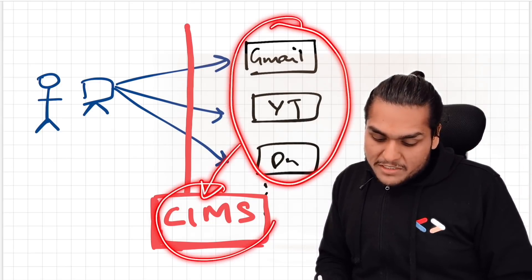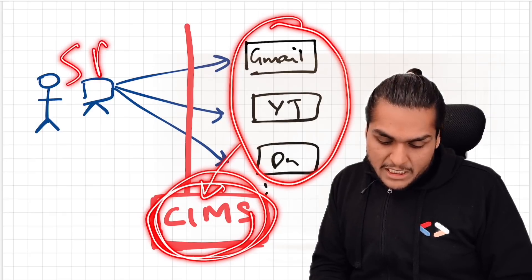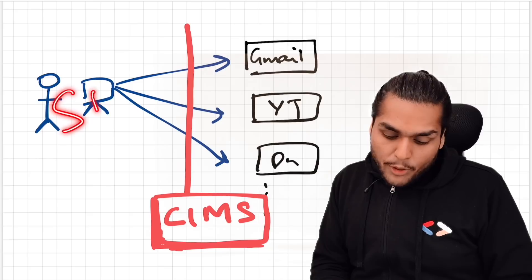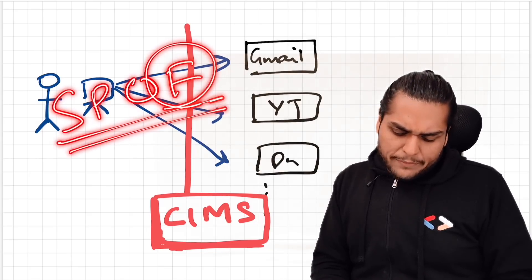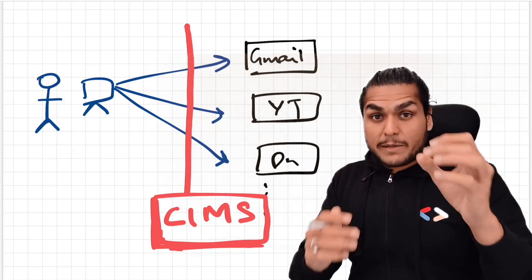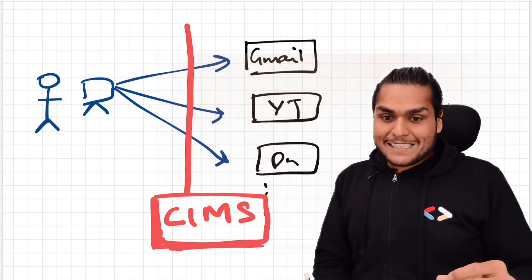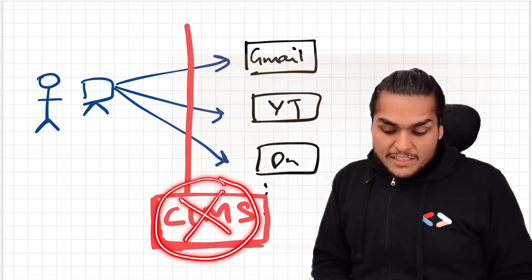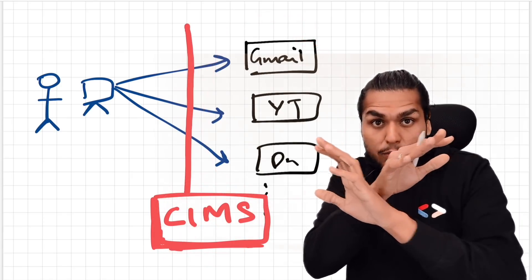This type of system in system design is known as SPOF — Single Point of Failure. A SPOF system is one where if that single system fails, everything kind of goes down.